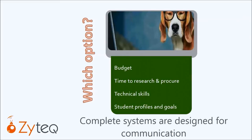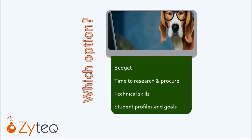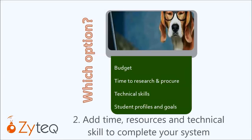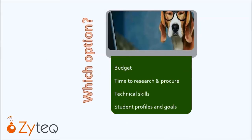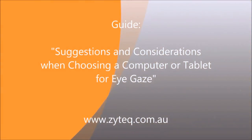These complete systems are designed to be communication devices for individuals, and many of the funding agencies around Australia will contribute to funding for individual communication systems. The second consideration is the time, resources, technical skills and computer knowledge available to put towards the do-it-yourself kits and setting them up. Mainstream computers are constantly changing. The assistance we can provide is in the form of a guide to indicate the computer specifications, features and considerations when choosing a computer to use with the eye gaze technology. We're unable to recommend specific computer models or brands.